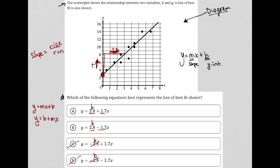So therefore, the correct answer must be choice A because it gives us the correct y-intercept of 2.8 and it gives us a positive slope, which is what we expect. So choice A is the correct answer.